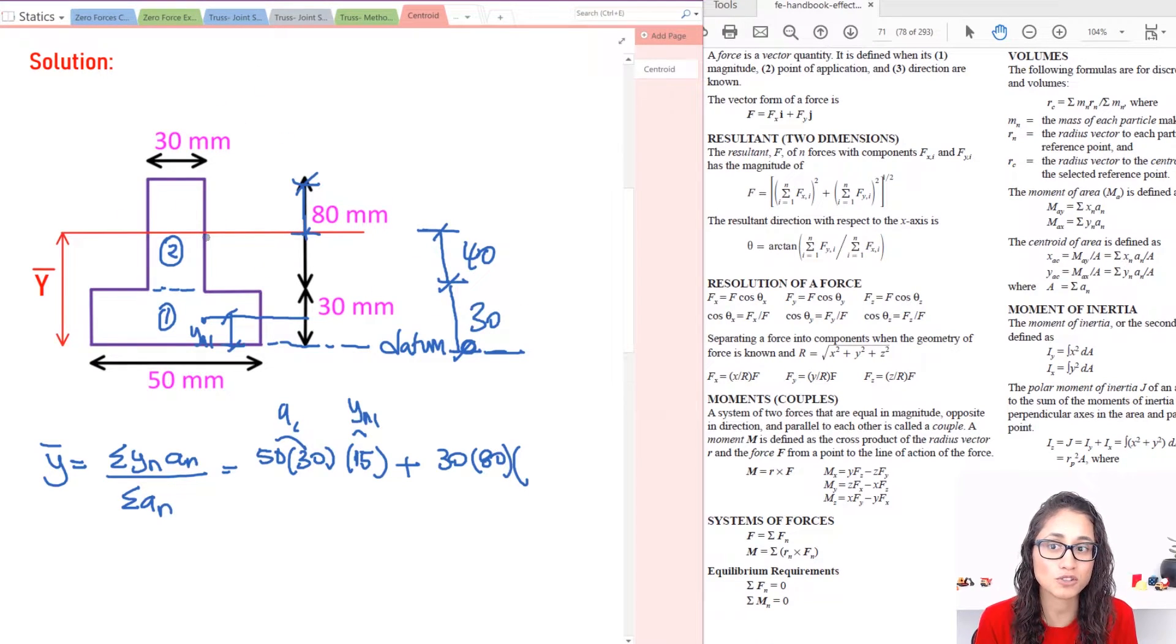So what we do is you do 40, which is the centroid of part 2, and you add whatever length that is to your datum. So this is going to be 40 plus 30. So this is Yn2. And this is my area 2.